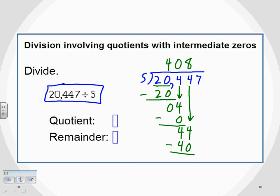And when I subtract those two, I get 4. And I'm not done yet because there is one more digit that I need to bring down. I need to bring down that 7. So I ask myself once again: does 5 go into 47? And yes it does. It goes into it nine times because 9 times 5 is 45.